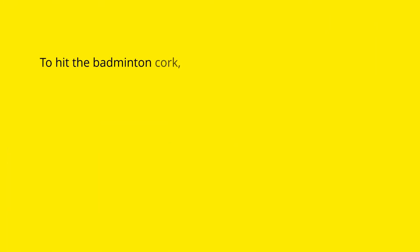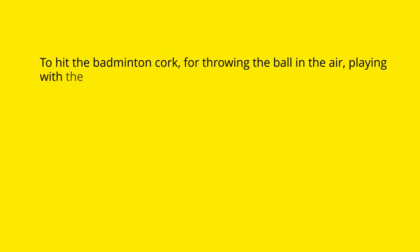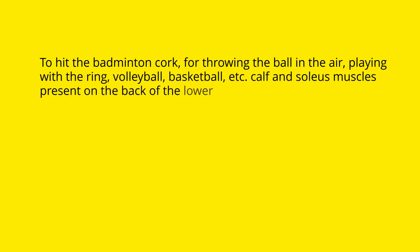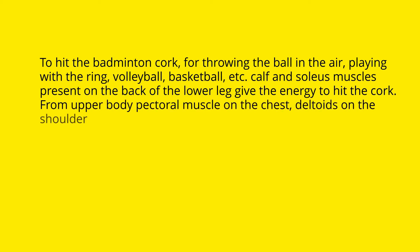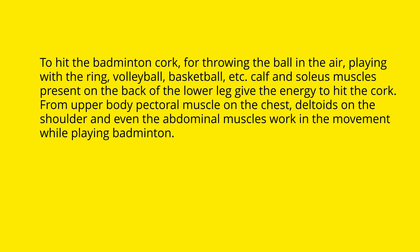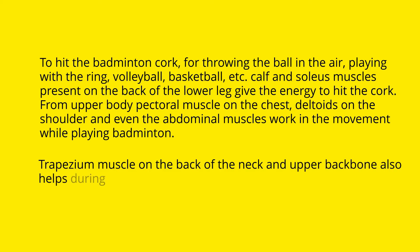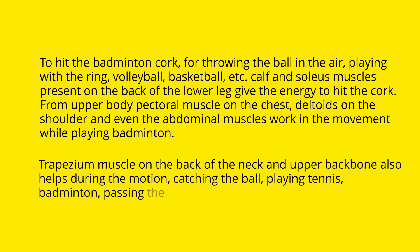To hit the badminton cork, the calf and soleus muscles on the back of the lower leg provide the energy. From the upper body, the pectoral muscles on the chest, deltoids on the shoulder, and abdominal muscles work during the movement while playing badminton. The trapezius muscle on the back of the neck and upper backbone also helps during the motion.